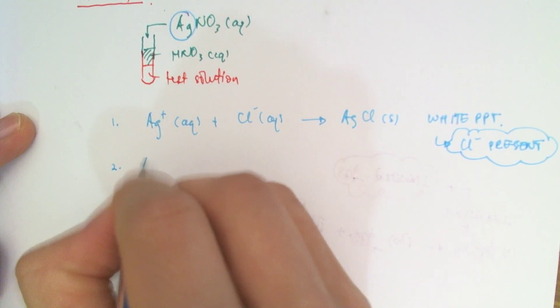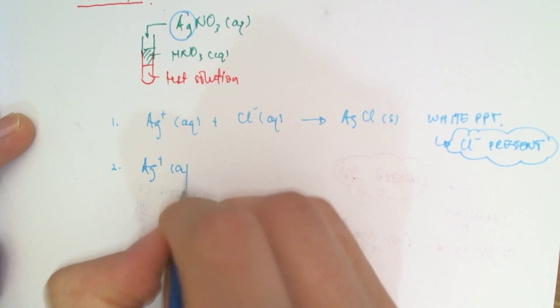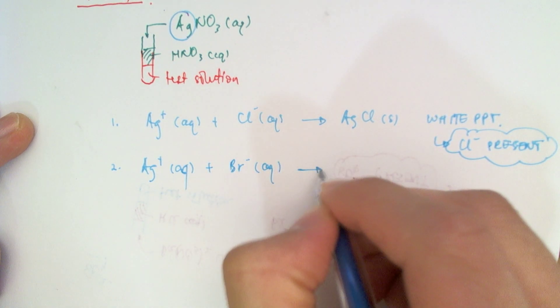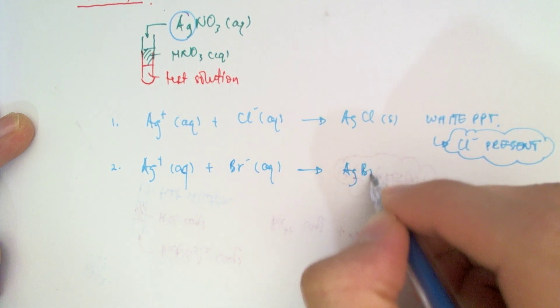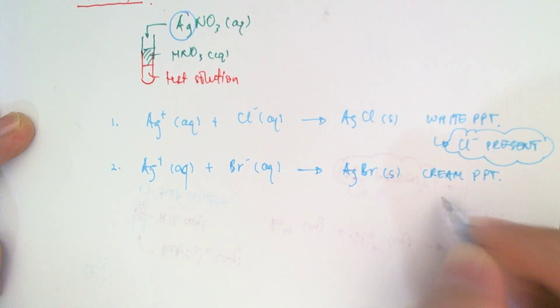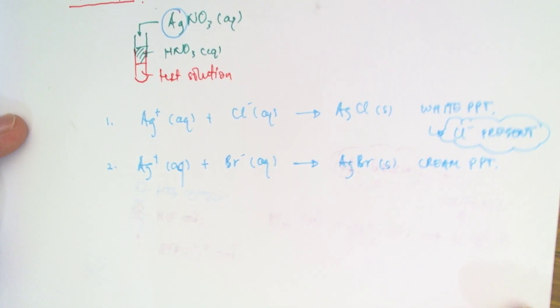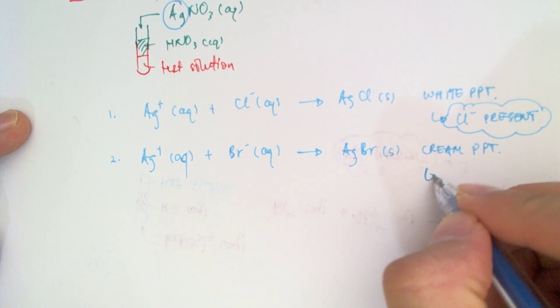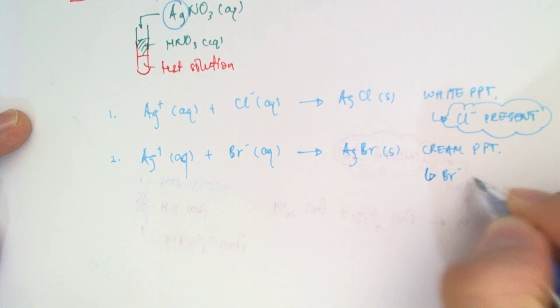Next up, if I take silver and bromide is present, what I'm going to see is a cream colored precipitate, which dissolves in ammonia. So if you wanted to confirm it, you could add some ammonia to confirm it. So this one confirms bromide.